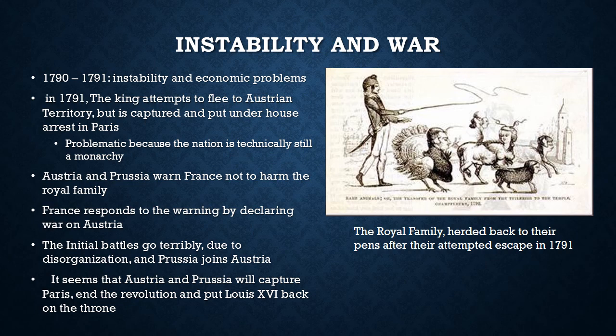The reason the king's escape attempt was so problematic is that the nation was still technically a monarchy and the king was still technically in charge of the country. Soldiers arrested the king and took him back to Paris. This cartoon makes fun of the fact that the king was more or less herded back to Paris like some kind of domesticated animal. It seemed like the king was pretty much ready to betray the new French government. The king was now under house arrest, and Austria and Prussia — the absolutist monarchies to the east — warned France not to harm the royal family. France interpreted this as a threat and responded by declaring war on Austria.